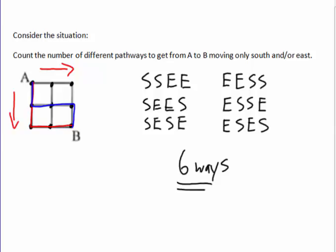Now counting is one way to do these if they're small paths, these small squares or rectangles. As they get larger, we want to find a method.